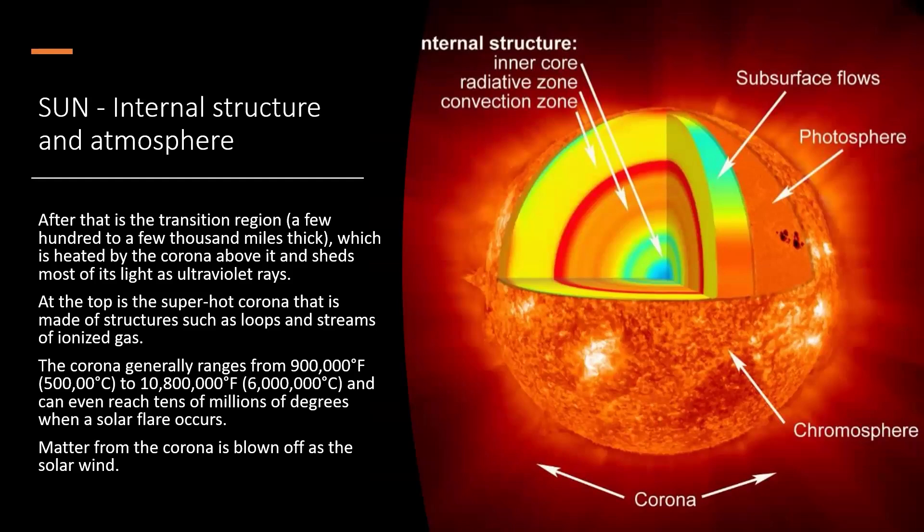Now, after we've done all that, we come to the transition region, which is 100 to a few thousand miles thick, which is heated by the corona above it and sheds most of its light as ultraviolet rays. So these are the rays that give us the sunburns and suntans. At the top is a super hot corona that is made up of structures such as loops and streams of ionized gas. The corona itself generally ranges from 900,000 degrees Fahrenheit or 500,000 degrees Celsius to about 10,800,000 degrees Fahrenheit or 6 million degrees Celsius, and can even reach tens of millions of degrees when a solar flare occurs.